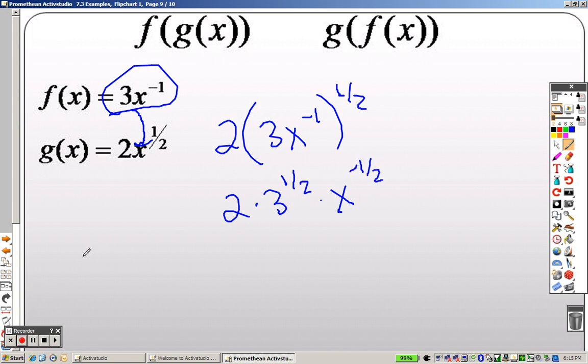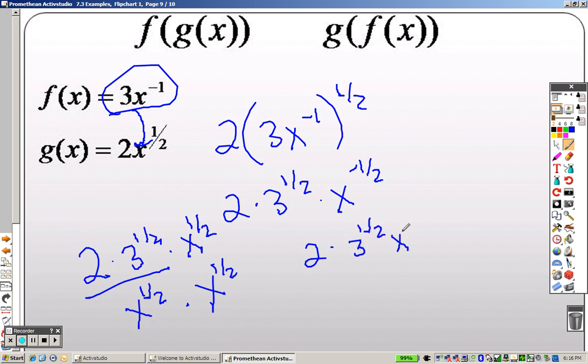Once again, we can't have a 1 half on the bottom, so I multiply by a half because I need to make a whole on the bottom. So I end up with 2 times 3 to the 1 half, x to the 1 half, over x, because a half plus a half is a whole.